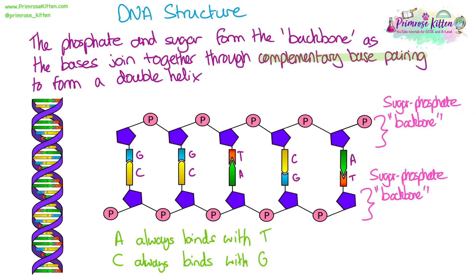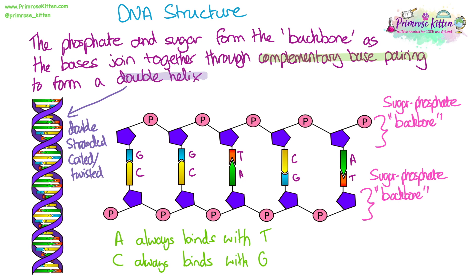What we mean by complementary base pairing is that the base A — adenine — always binds with thymine, and the base C — cytosine — always binds with G, guanine. When we see a double helix, you can see it here once it's been twisted around. So we've got two strands — we are double stranded — and the coiling or twisting is known as a helix, like helical.